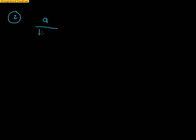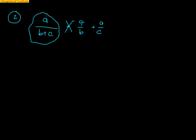Other mistakes I see a lot involve fractions. For example, if you have A over (B plus C), some kids will try to write that as A over B plus A over C. But B plus C is an expression — it is the denominator — and you cannot cancel it out or split it that way. That's just absolutely incorrect; there's nothing you can cancel out there.